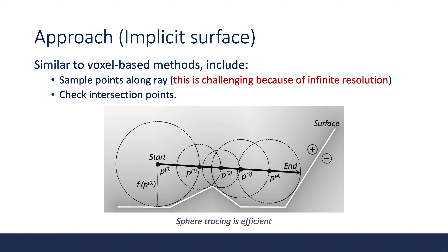Finally, we show the rendering for implicit surface, which is similar to the rendering of voxels. It first samples points along the rays; however, this step is more challenging because implicit surface has infinite resolution. Then it checks the intersection points. How to sample points more efficiently is crucial for implicit surface-based rendering — a classic approach is to use sphere tracing.